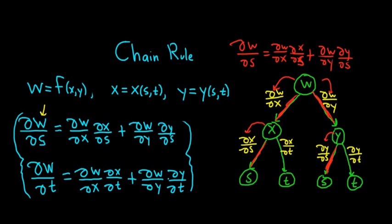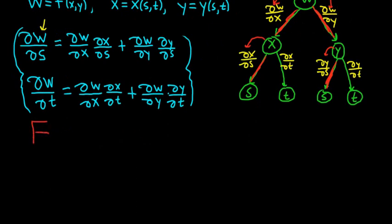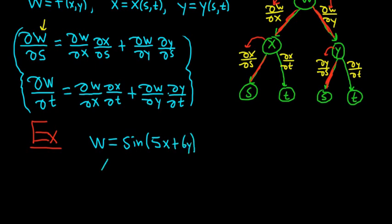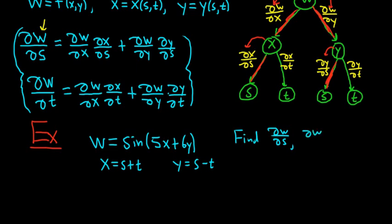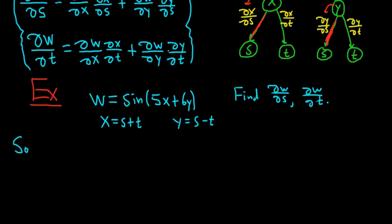Let's go ahead and do an actual problem. So I spent six minutes explaining the chain rule without a problem, but that's okay — patience. Let's do a nice problem. Here's one: w is equal to sin(5x + 6y), x is equal to s + t, and y is equal to s − t. The question is to find ∂w/∂s and also to find ∂w/∂t. Let's just focus on finding the derivatives.